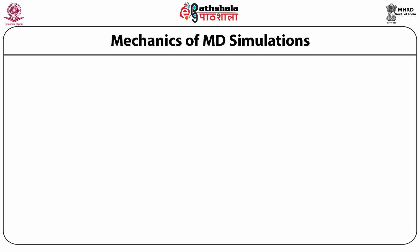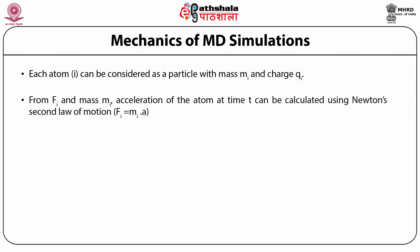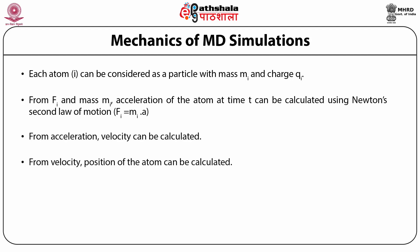Each atom i can be considered as a particle with mass mᵢ and charge qᵢ. From force fᵢ, calculated using interaction potential and mass mᵢ, the acceleration at time t can be calculated using Newton's second law (F = ma). From acceleration, velocity can be calculated, and from velocity, the position of the atom. The new position at time t + Δt can thus be determined. By integrating these positions with respect to time, the trajectory of the molecules can be generated, which is the output of MD simulations.